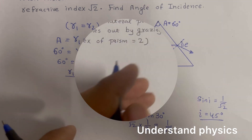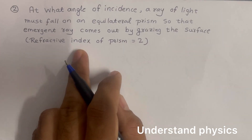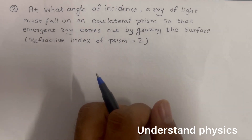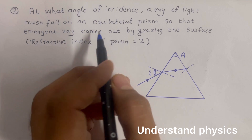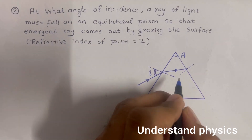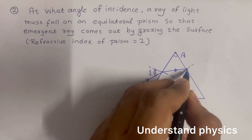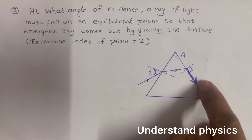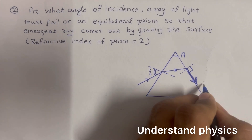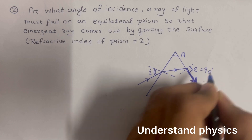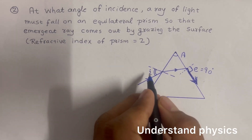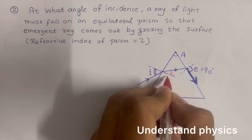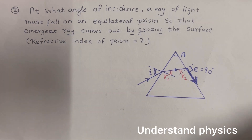Moving to the second problem: the emerging ray is coming out by grazing the surface. When the ray comes out this way, touching the prism surface, this is called grazing. In this case the emergence angle has become 90 degrees. We need to find the angle of incidence. This angle is r1 and this angle is r2.